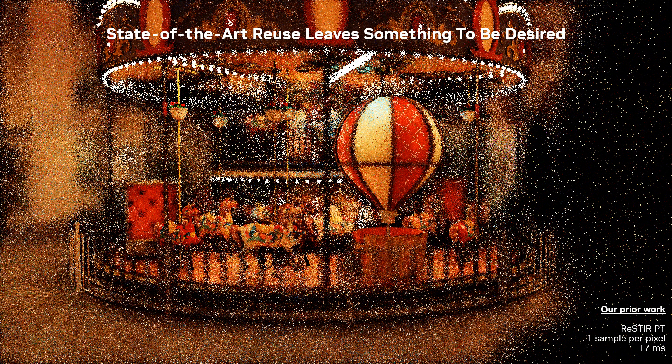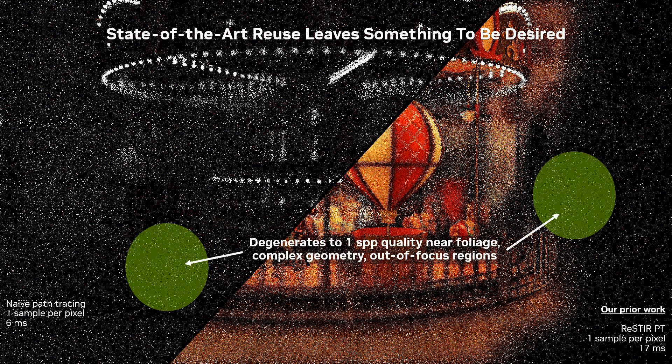Prior state-of-the-art reuse leaves something to be desired. This image shows the work known as ReStirPT. While ReStirPT improves significantly over naive one-sample-per-pixel path tracing, it does degenerate back to lower quality near foliage and other complex occluders.